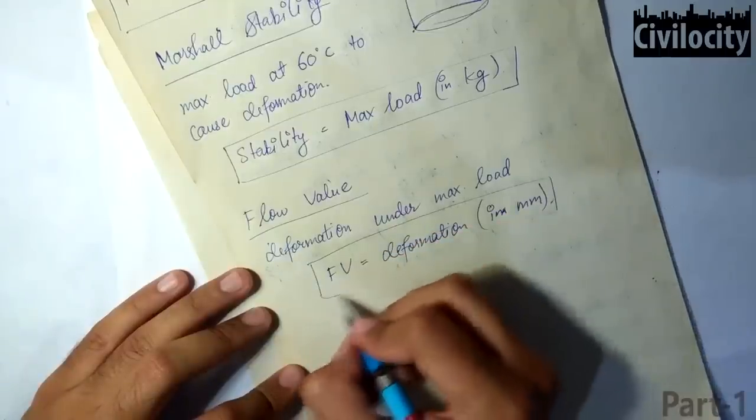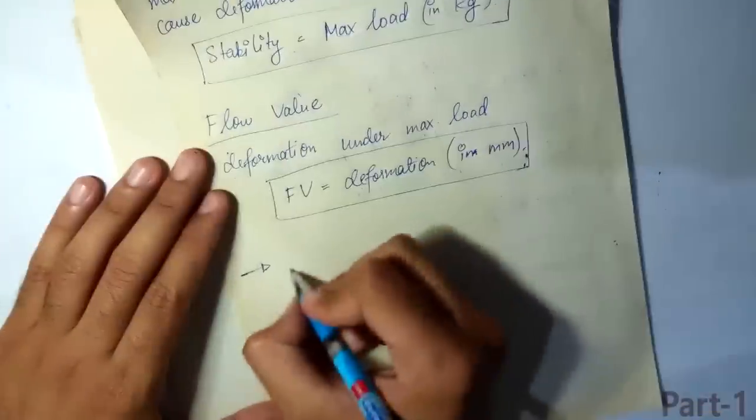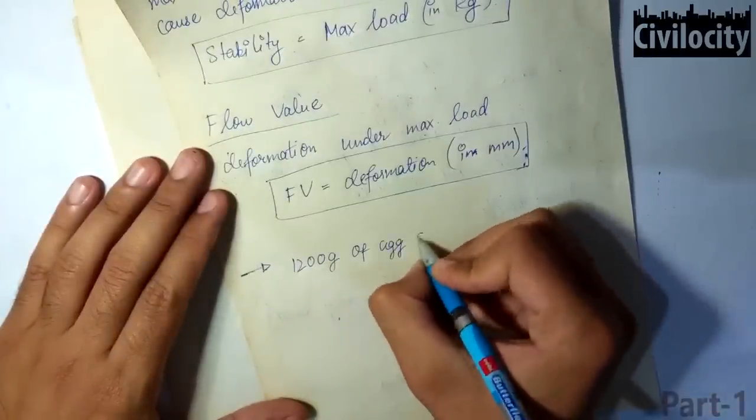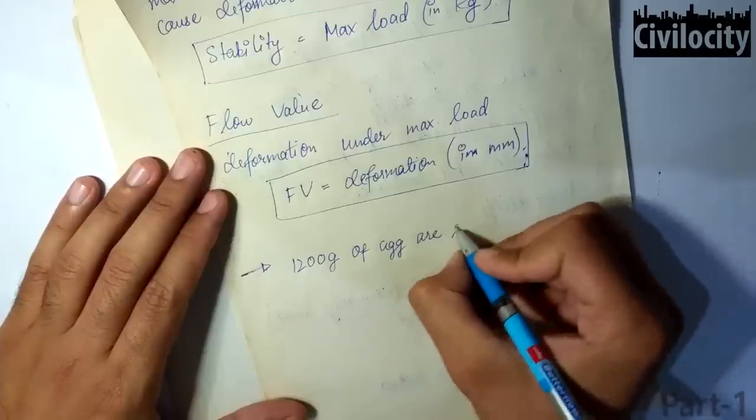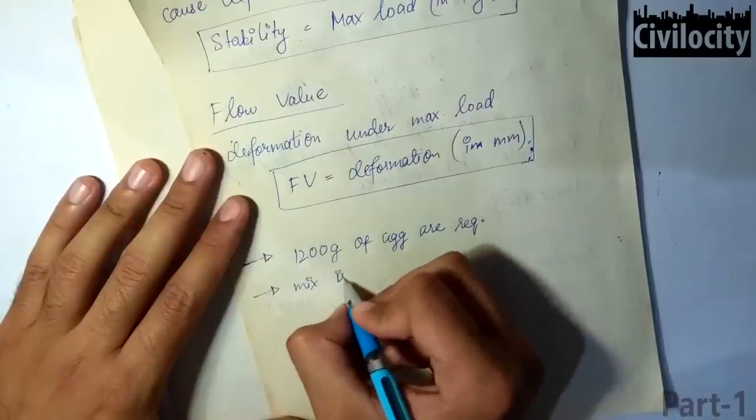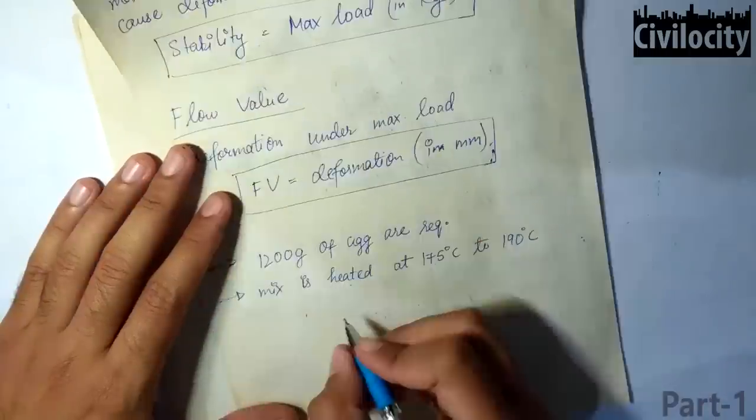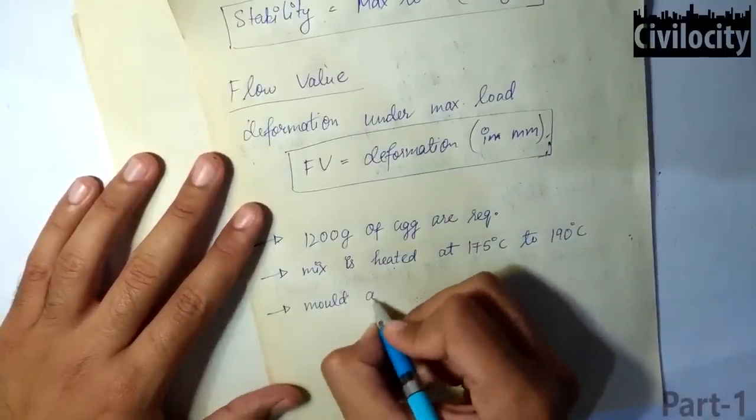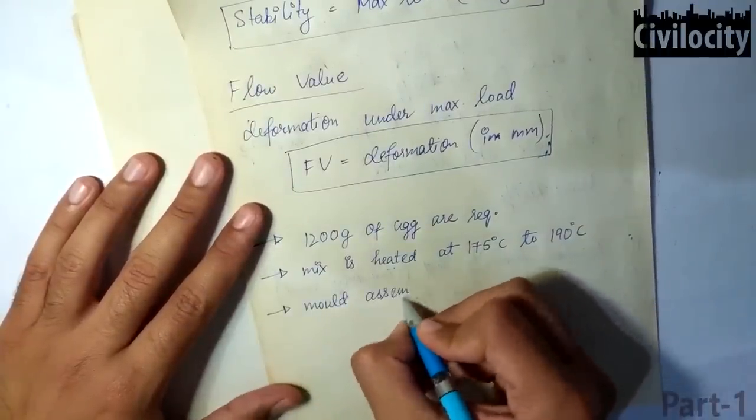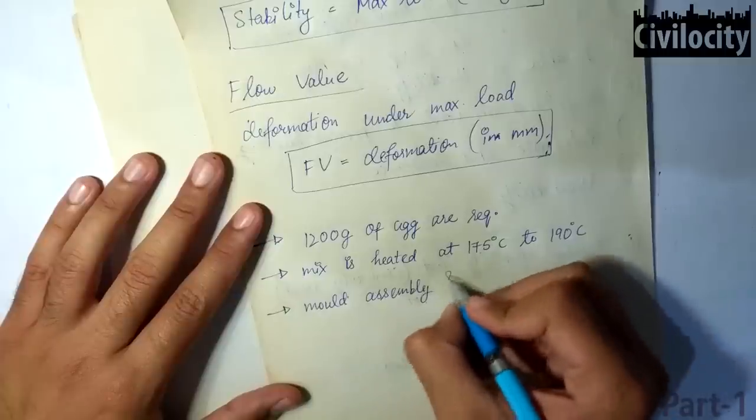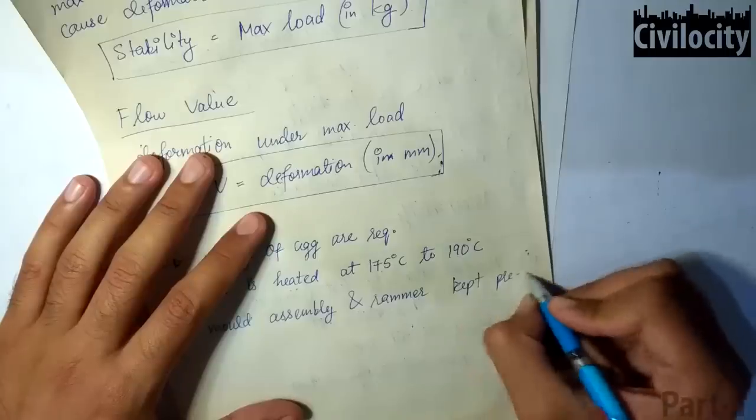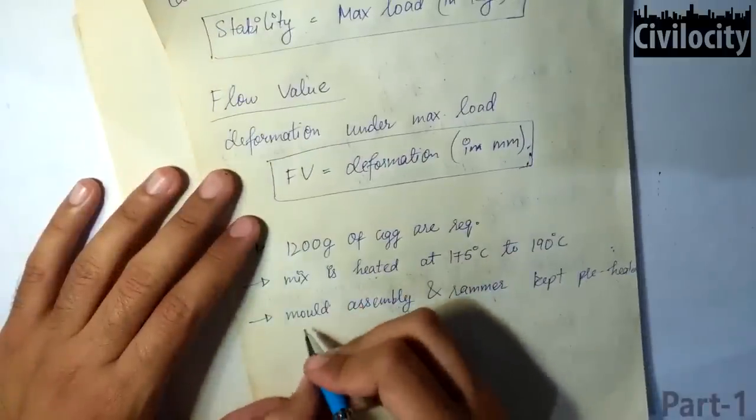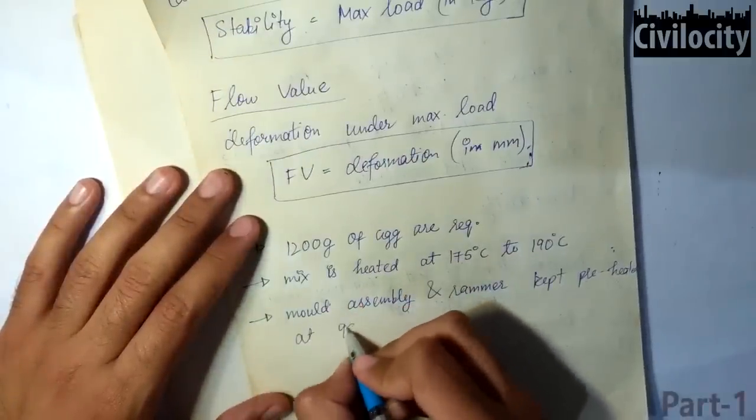Now, let's talk about this Marshall Mix Design Test. In this test, the aggregate and filler are mixed together in the desired proportion to fulfill the design requirements and the specified gradation. The required quantity of the material aggregates is weighed to produce a compacted bituminous mix specimen of 63.5 mm thickness and 101.6 mm diameter. About 1200 grams of aggregate mix is required. And this mix is heated at a temperature of 175 degree Celsius to 190 degree Celsius.